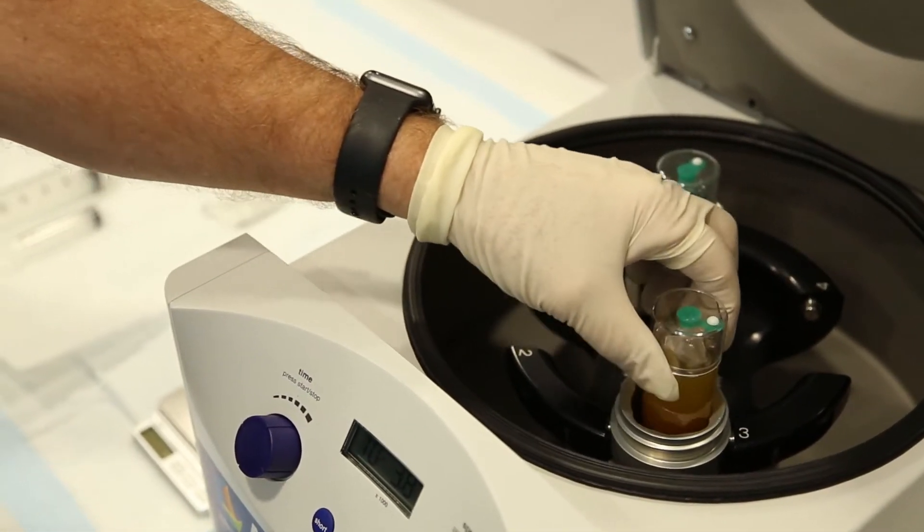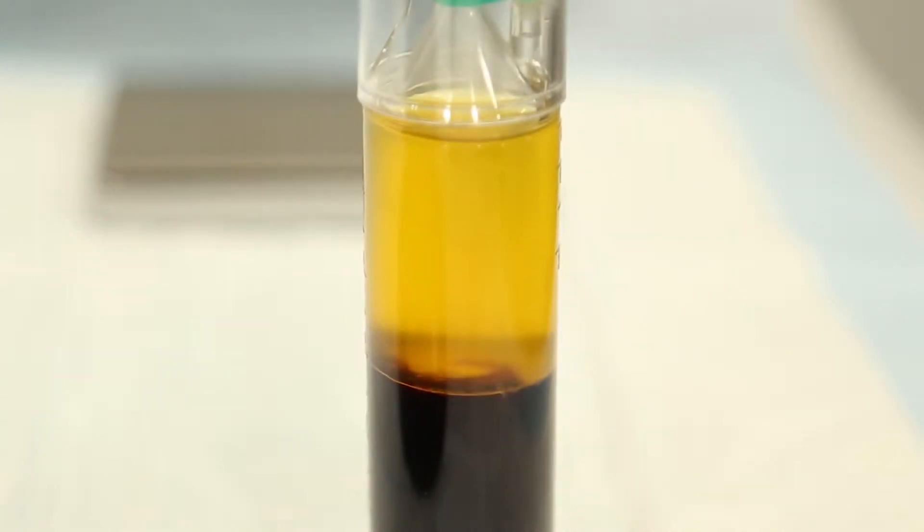After the spin is completed, carefully remove the XL concentrating device from the centrifuge. You should see a clear separation between red blood cells, the buffy coat, and the platelet poor plasma.